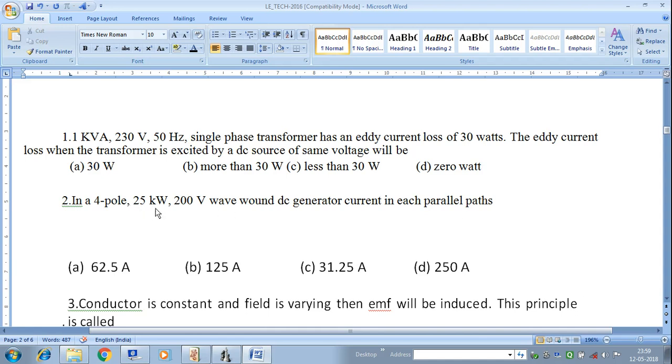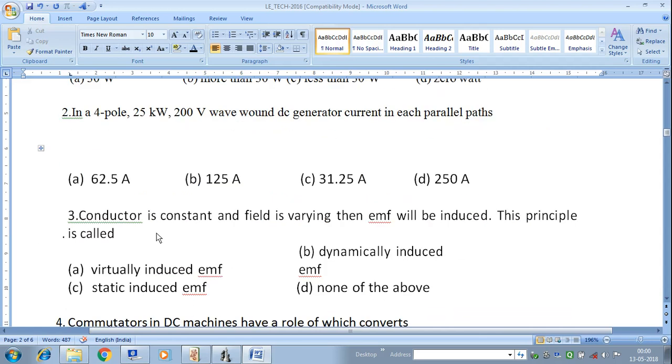So, we are given 25 kilowatt and 200 volt. Therefore, 25 into 10 to the power 3 divided by 200 volt, which gives 125 ampere.